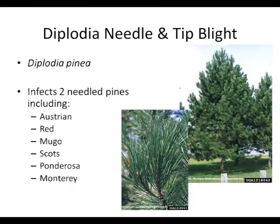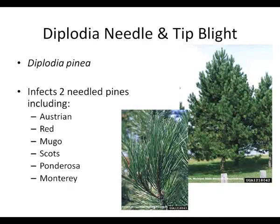Diplodia Needle and Tip Blight, or Diplodia pinae, is an important disease of two-needled pines in Ohio, including Austrian, Red, Mugo, Scots, Ponderosa, and Monterey pines.